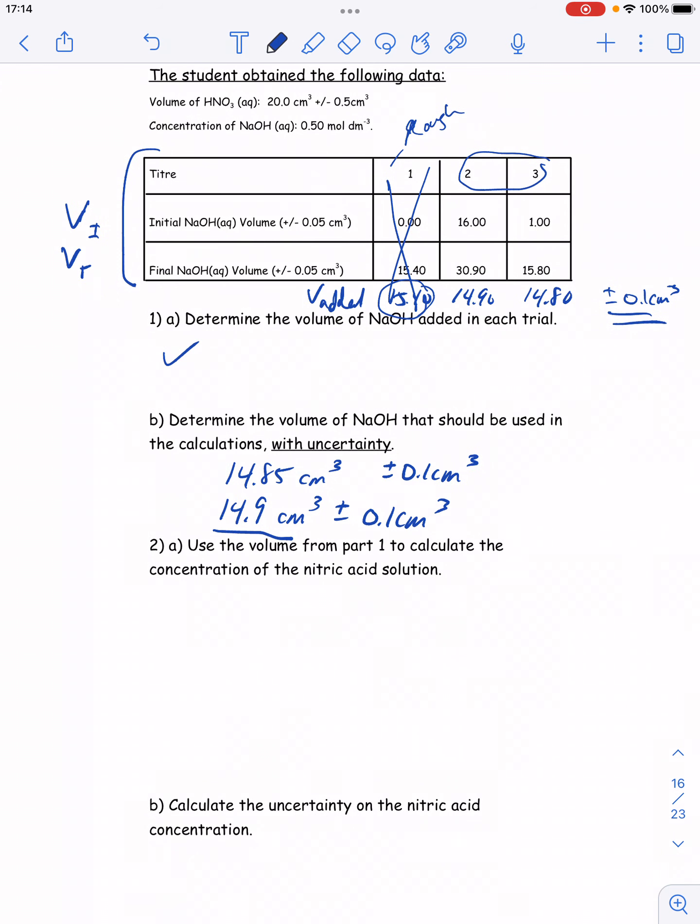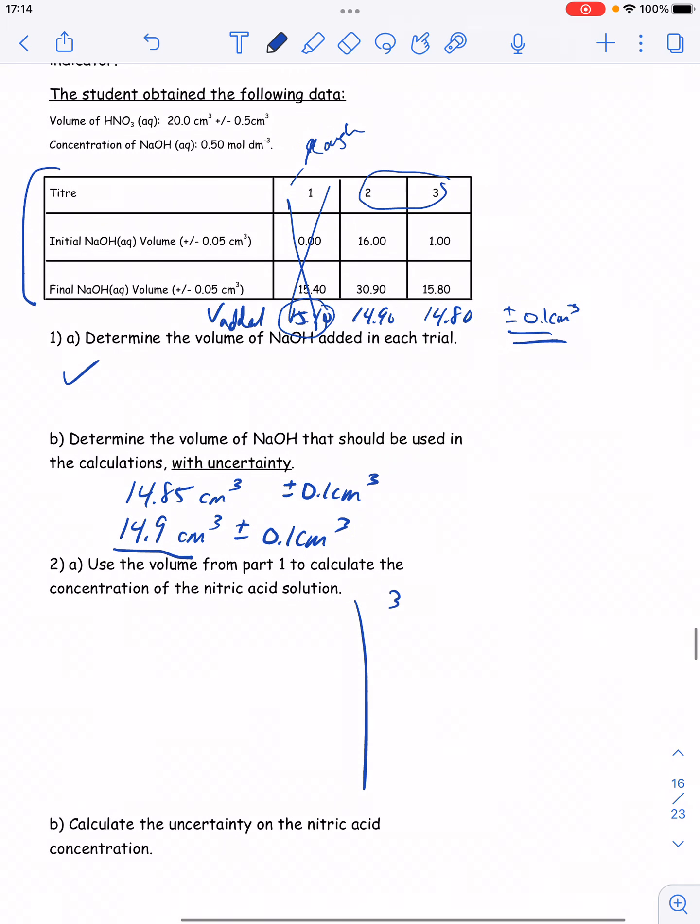Now it says use that volume to calculate the concentration of nitric acid. Well, this is a three-step stoichiometry question. If I'm going to get concentration, I need moles and I need volume. I know the volume of nitric acid—I was given it at the start of the question. That was measured out as 20 cm cubed or 0.020 dm cubed.